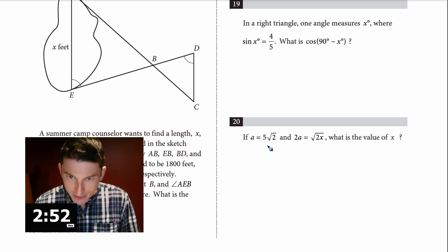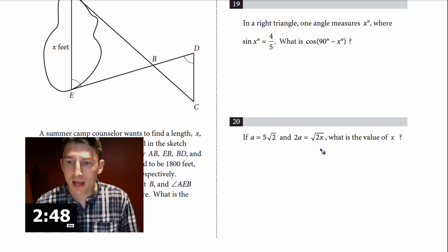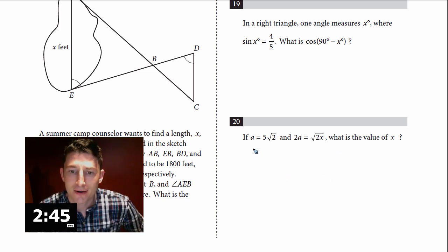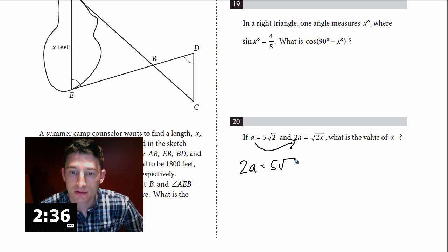Number 20: A = 5√2 and 2a = √(2x). What is the value of x? I want to make one expression look like the other, so I multiply A by 2: 2a = 10√2. I also know from the second equation that 2a = √(2x). So I set them equal: 10√2 = √(2x).